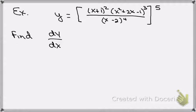For example, let's consider y equals [(x+1)² times (x²+2x-1)³ over (x-2)⁴] raised to the 5th power. And suppose we were asked to find dy/dx.